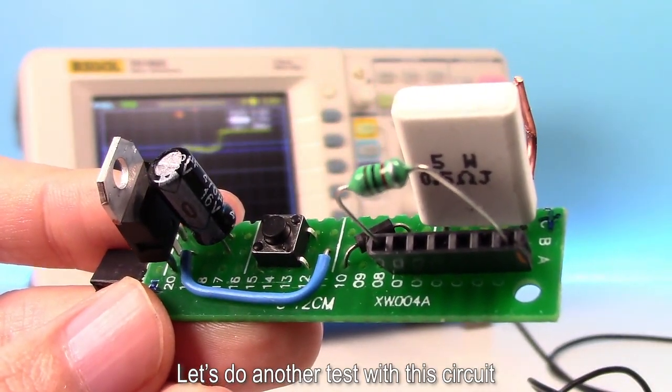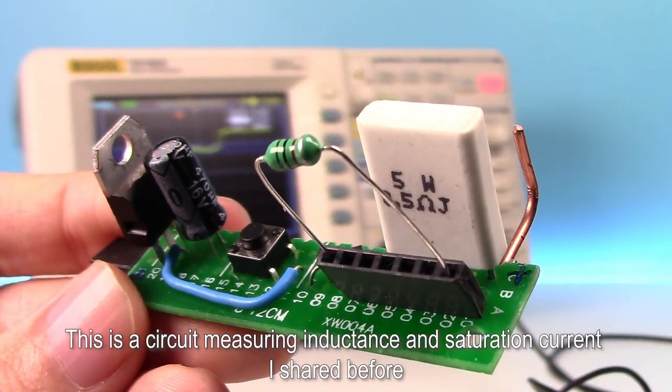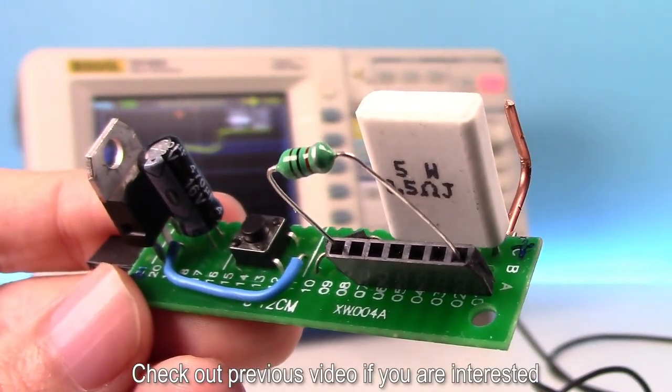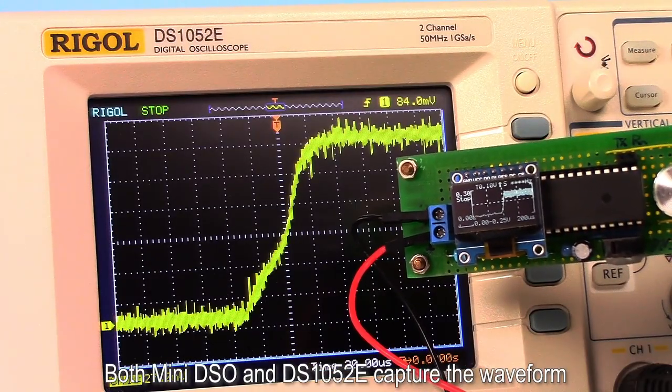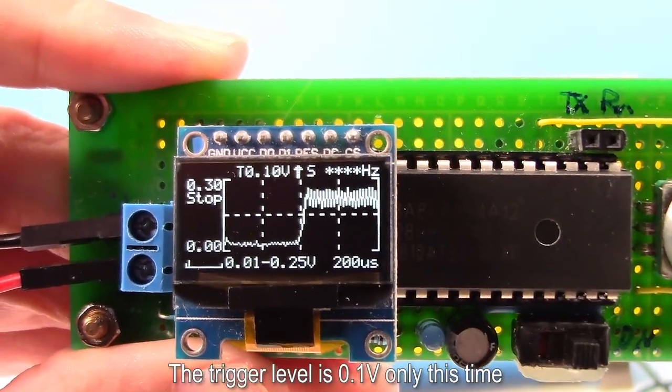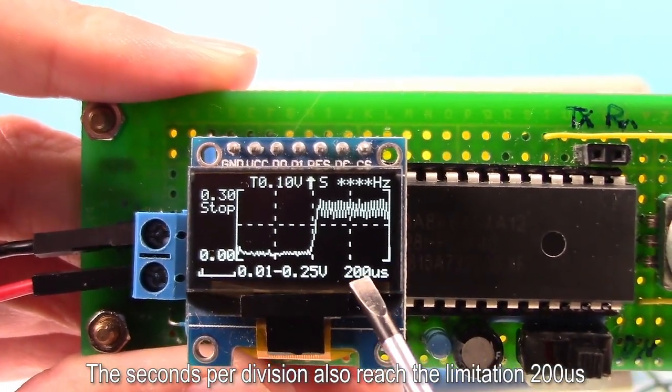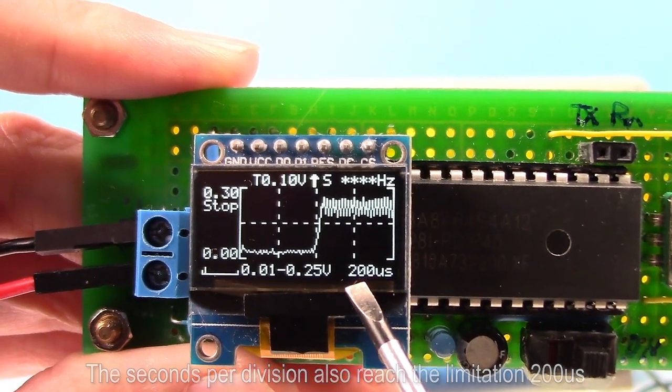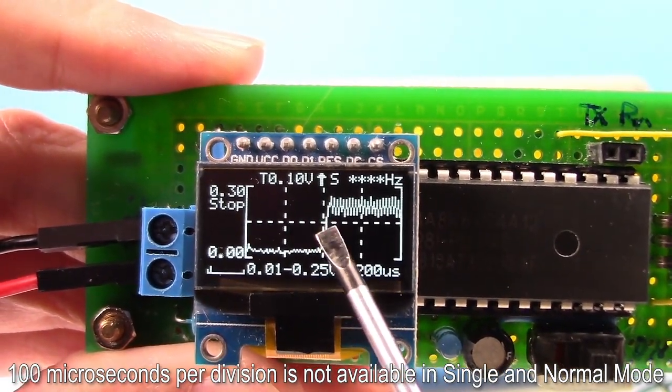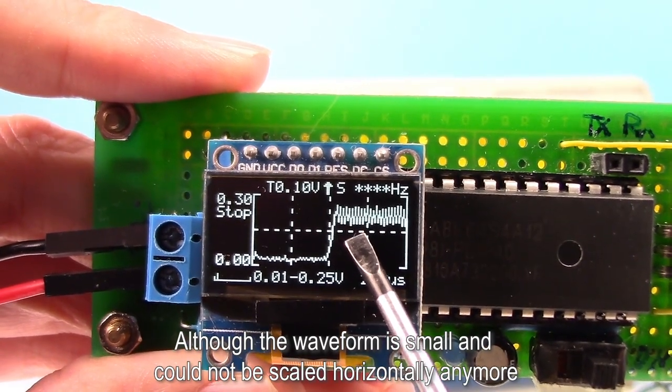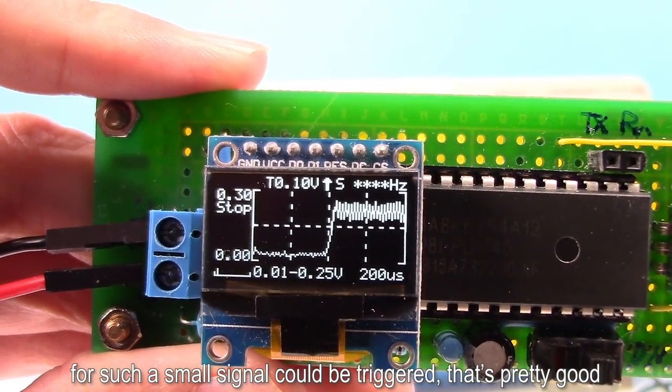Let's do another test with this circuit. This is the circuit measuring inductance and saturation current as shared before. Check out previous video if you are interested. Press the measure button. Both MiniDSO and DS1052E capture the waveform. The trigger level is 0.1V only this time. The seconds per division also reached the limitation to 100 microseconds. Due to the speed limit of MCU, 100 microseconds per division is not available in single and normal mode. Although the waveform is small and could not be scaled horizontally anymore, for such a small signal can be triggered that's pretty good.